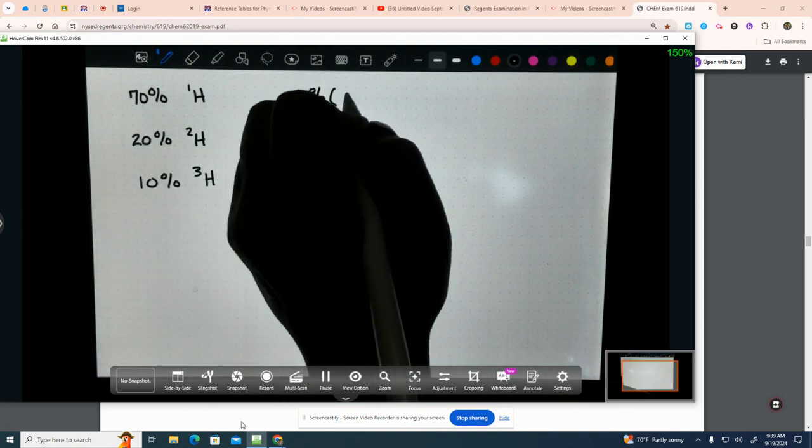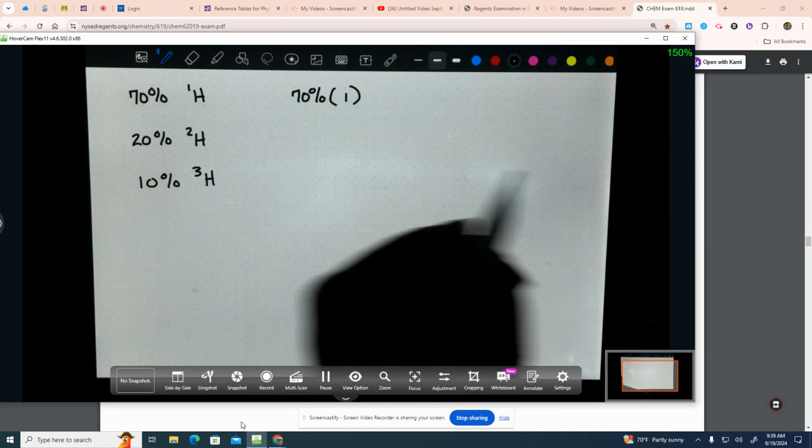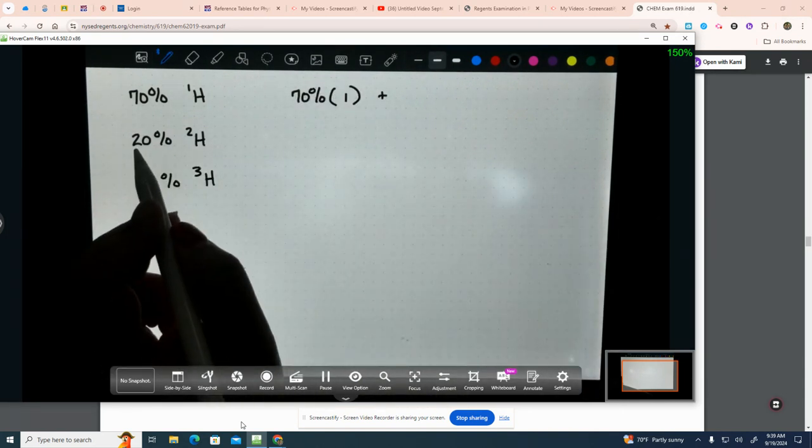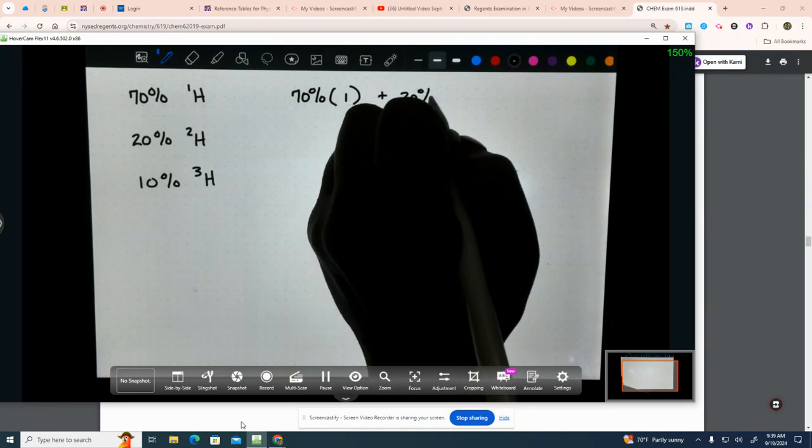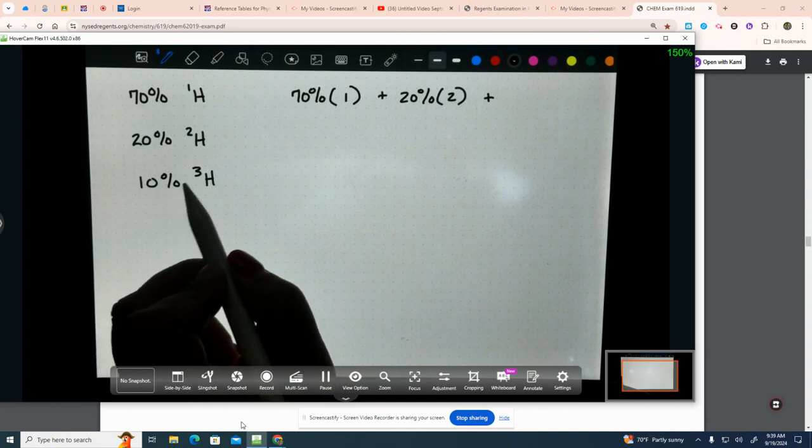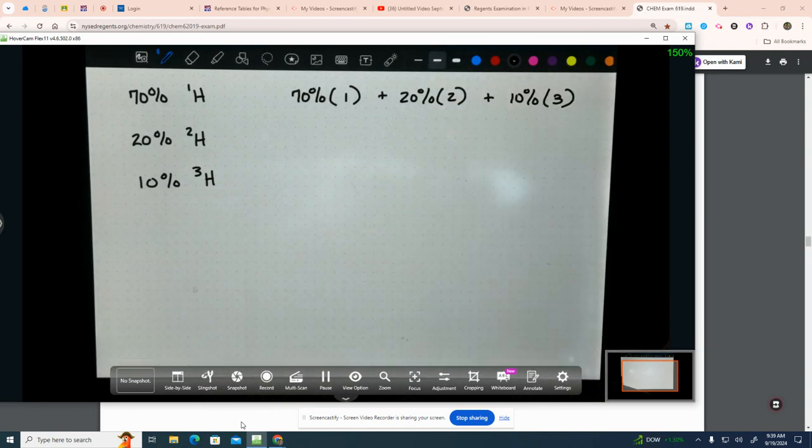We're going to take 70%. We're going to multiply it by 1. We're going to take that. We're going to add to it 20% times 2. We're going to add to that 10% times 3. That's the answer. Now, we didn't do the math part, but that's the answer.